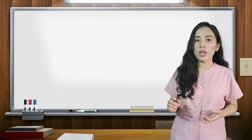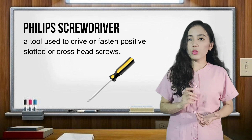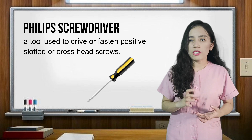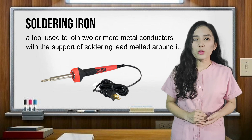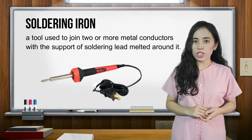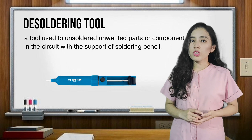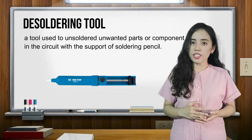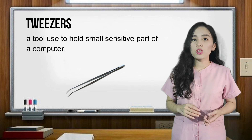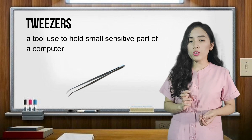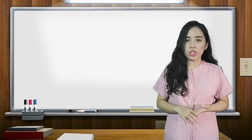If we have a flat-end screwdriver, we also have the Phillips screwdriver. It is the opposite of the flat-end screwdriver because it is used to drive or fasten positive or cross-end screws. Next, we have the soldering iron. It is a tool used to join two or more metal conductors with the support of soldering lead melted around it. We also have the soldering tool, used to unsolder unwanted parts or components in the circuit. Next, we have tweezers, a tool used to hold small sensitive parts of a computer. And we have a flashlight, a small electric light that gives light in dark conditions.